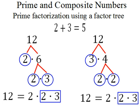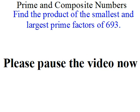Now I want you to try one on your own. 693 is a bit larger than 12, but the process is the same, and I'll give you a hint. Using your calculator, start by dividing 693 by the smallest prime and work up. The first prime is 2, but that won't work because 693 is odd. So next try 3. Go ahead and pause the video now.